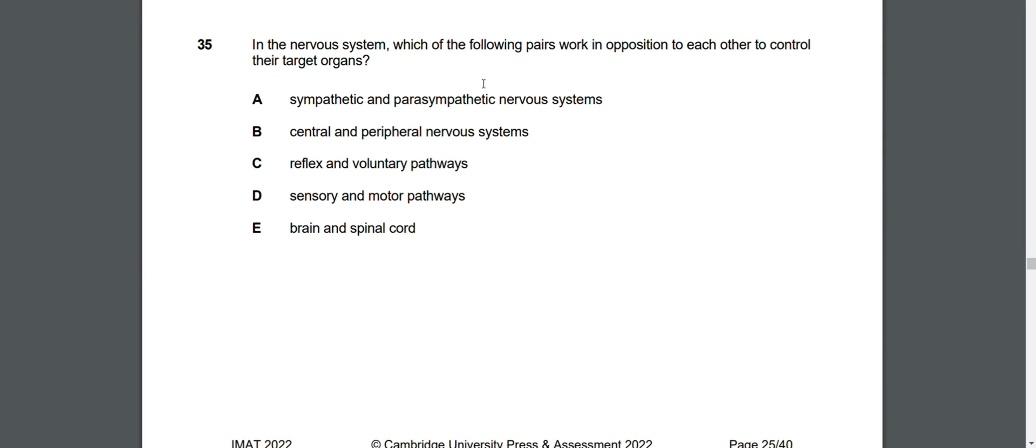The nervous system: which of the following pairs work in opposition to each other to control their target organs? The answer is sympathetic and parasympathetic nervous system, because the sympathetic nervous system is responsible for the fight or flight reaction when you get nervous, and the parasympathetic nervous system calms you down, so they work in opposition. This is the second time they ask about it, so it's a high yield topic.